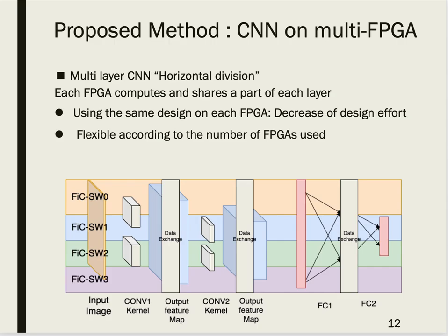Our proposed method is horizontal division: each FPGA computes and shares a part of every CNN layer. We compute one layer in parallel, and after that share the result with all-to-all communication. This method has the advantage of flexibility and reduced design effort. The proposed method uses a common design file, which reduces design effort. The number of FPGAs can be changed by simply adjusting parameters, making the proposed method scalable.